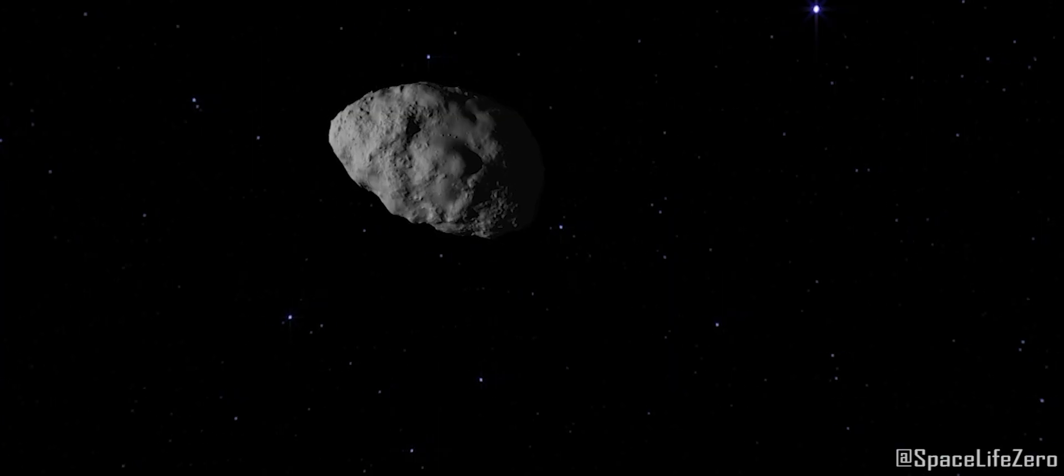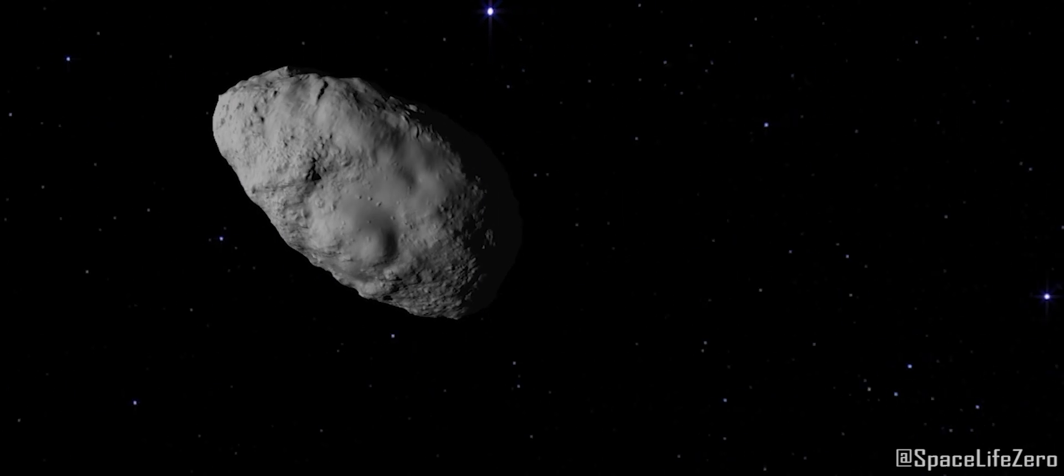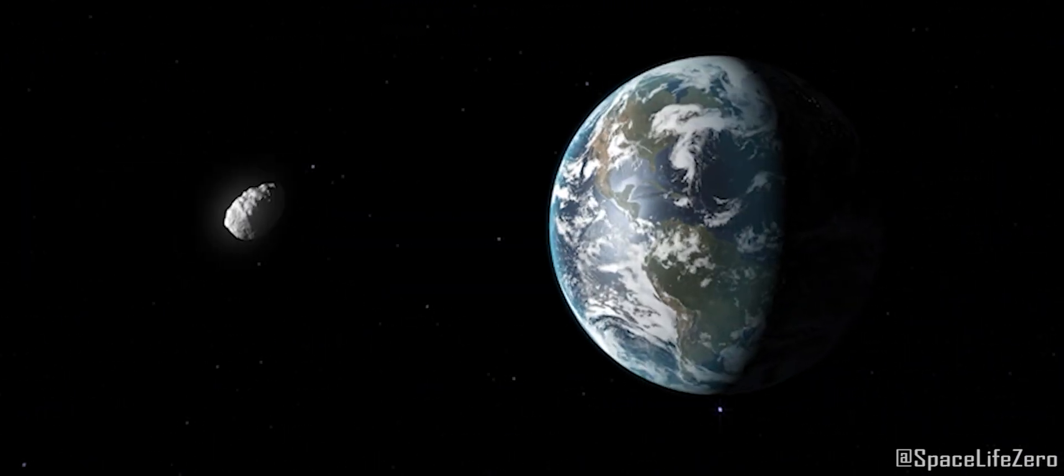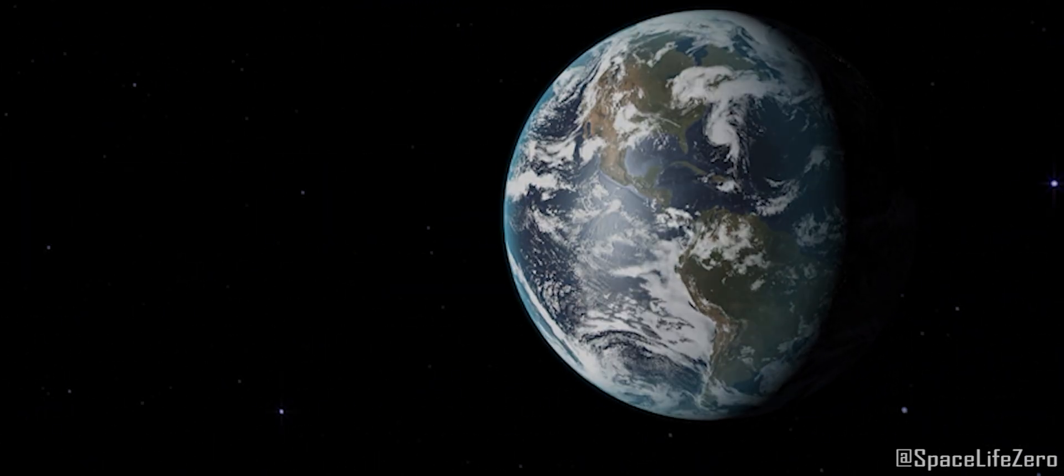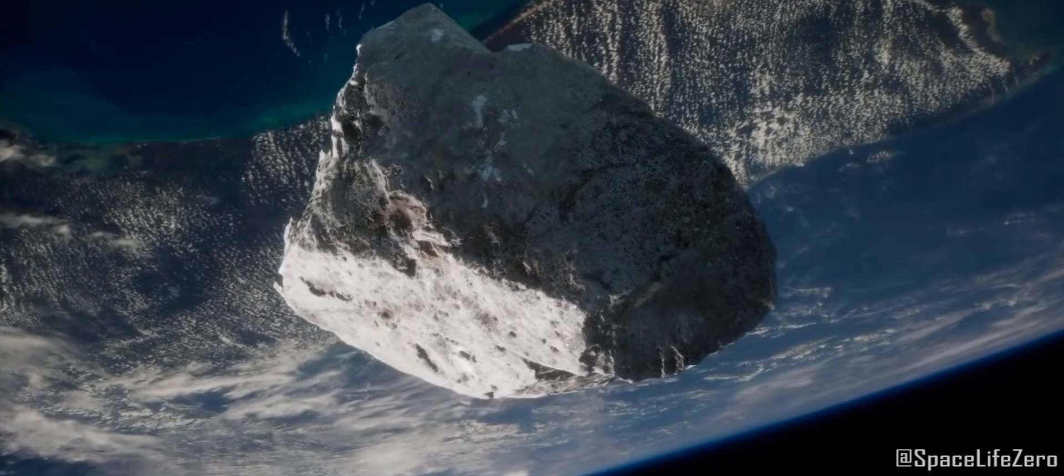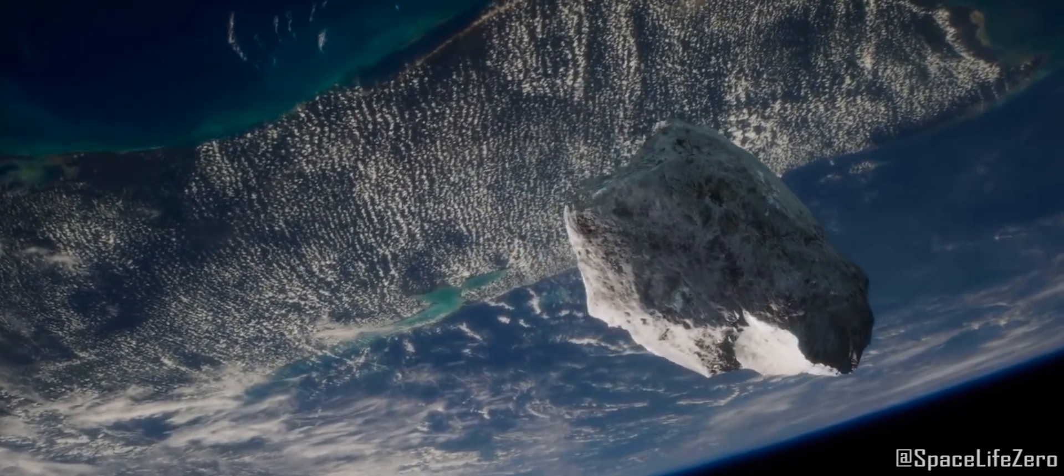But don't worry, the researchers have assured that Asteroid 2015 ME-131 will not hit Earth in its close approach on August 11. It will just fly past Earth at a close distance of 8.36 million kilometers at an incredible speed of 17 kilometers per second.